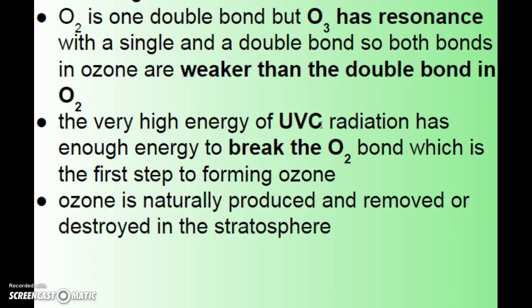We have UVA and UVB rays that get as far as the troposphere; UVC would be very harmful to us. When you're tanning, it's the UVB rays you're concerned about because they have more burning potential, and UVC would definitely be dangerous. That gets filtered out in the stratosphere because of O2 being converted to O3.